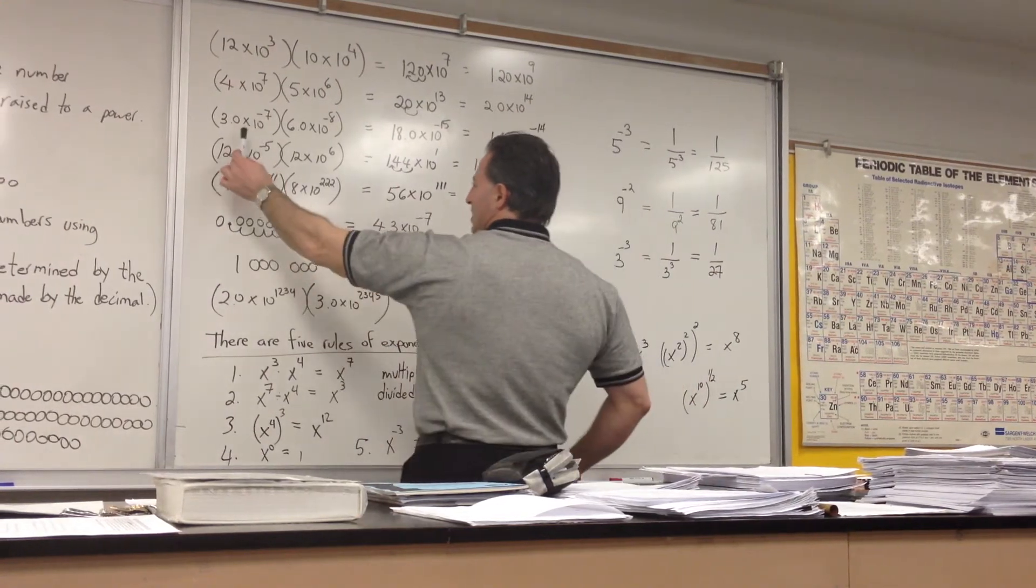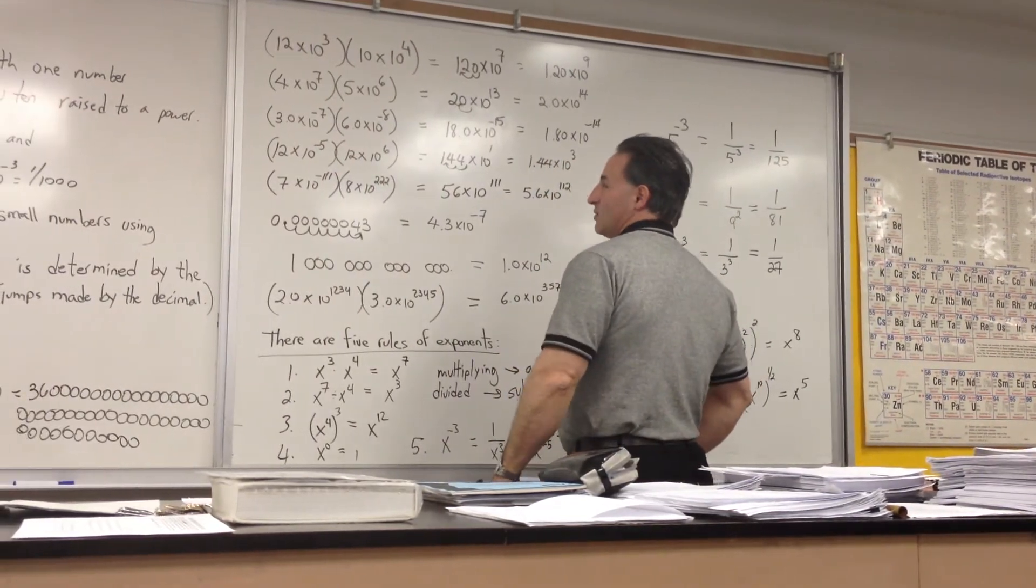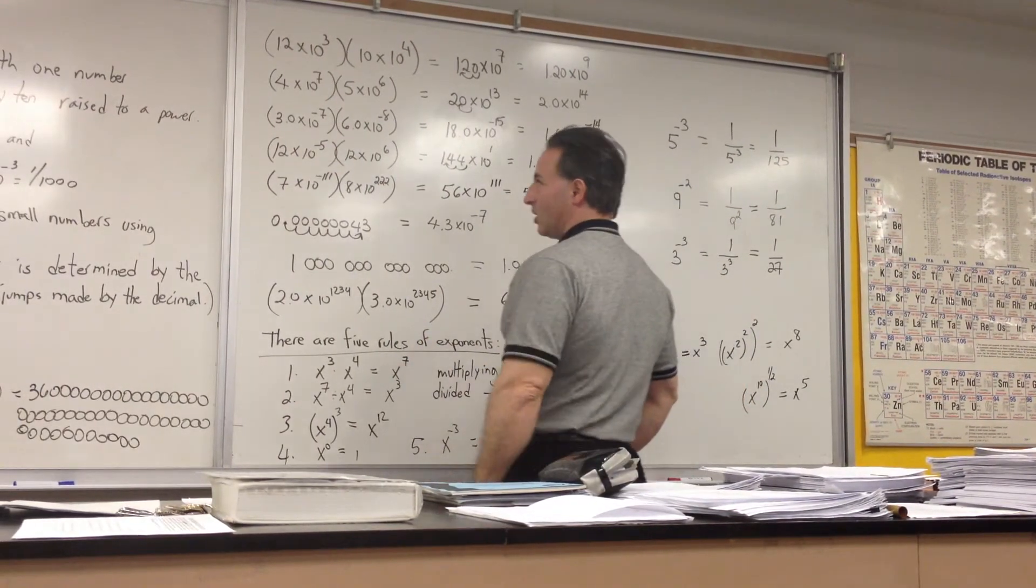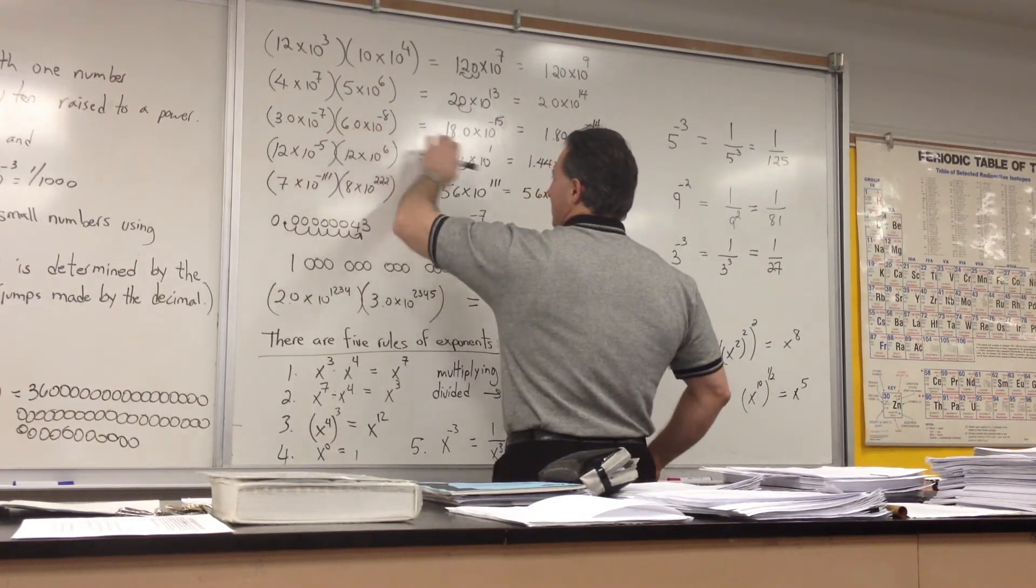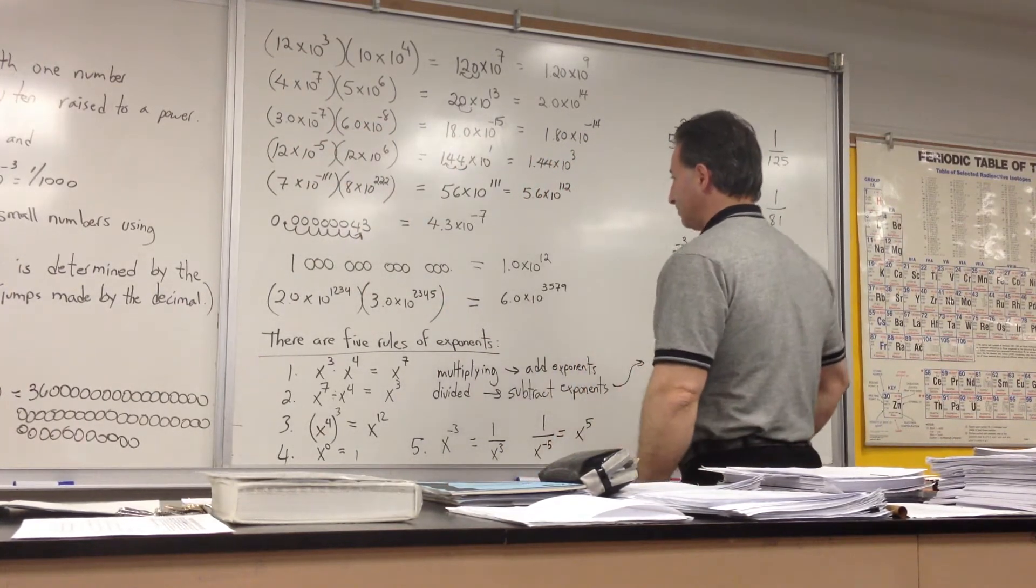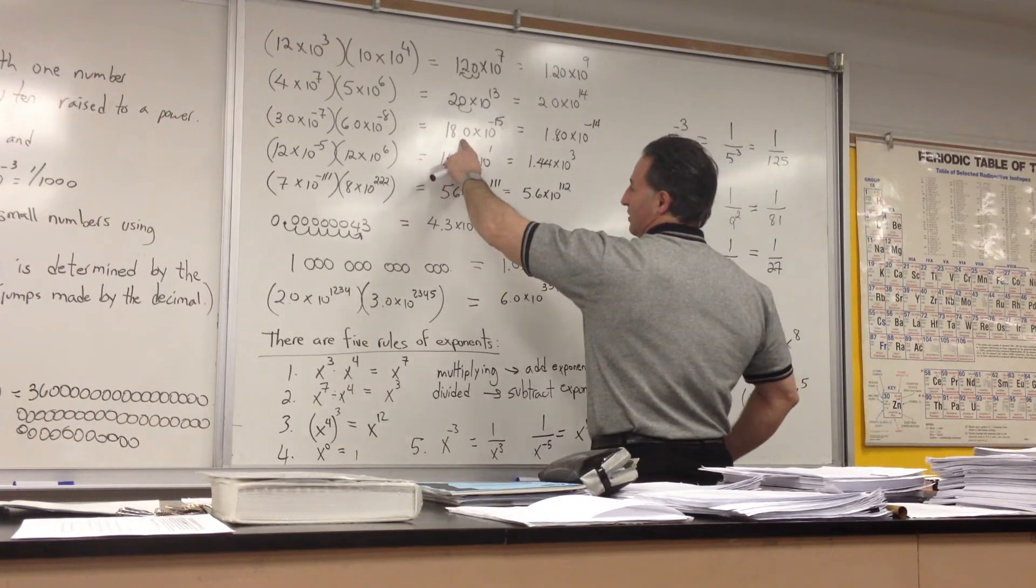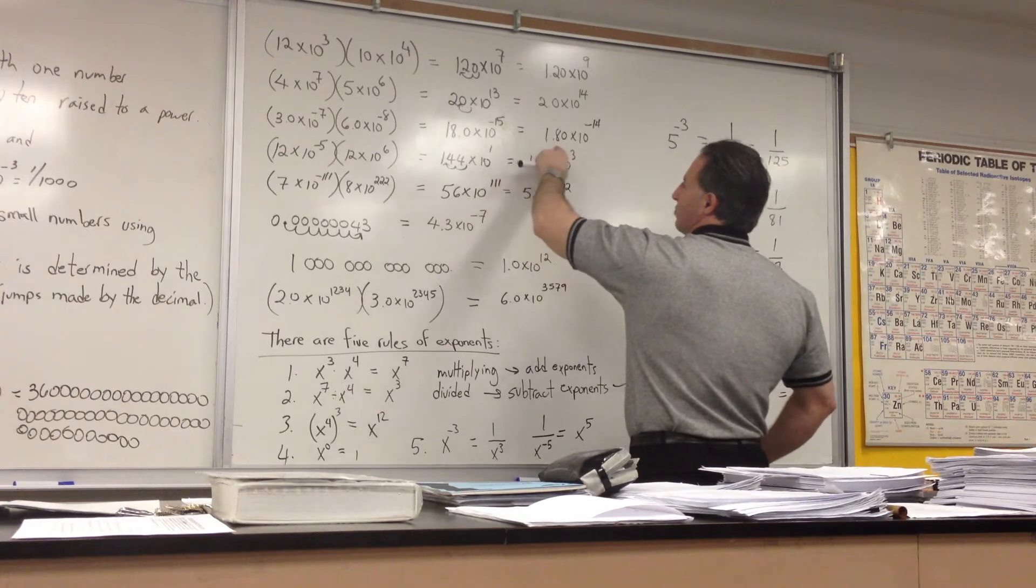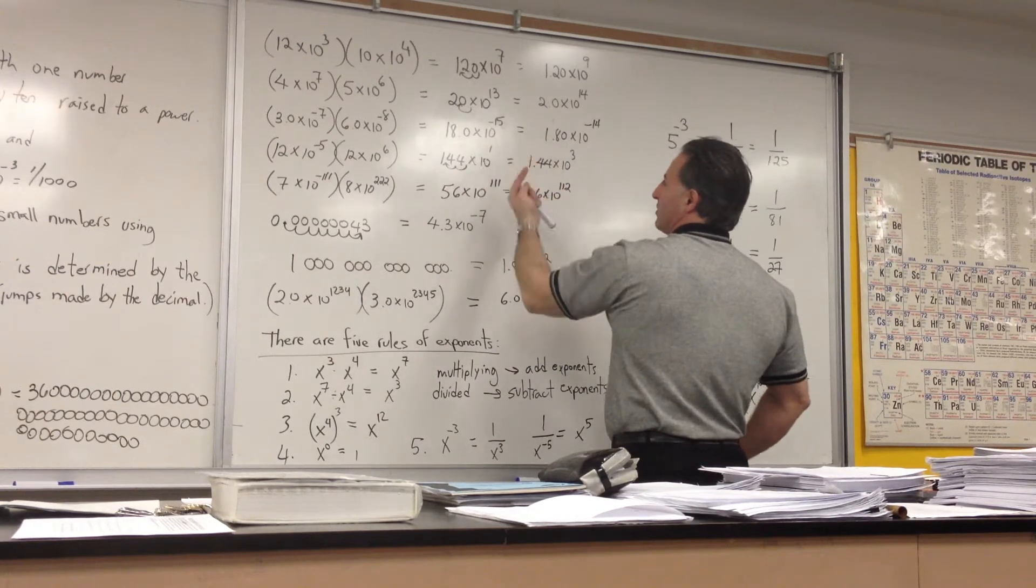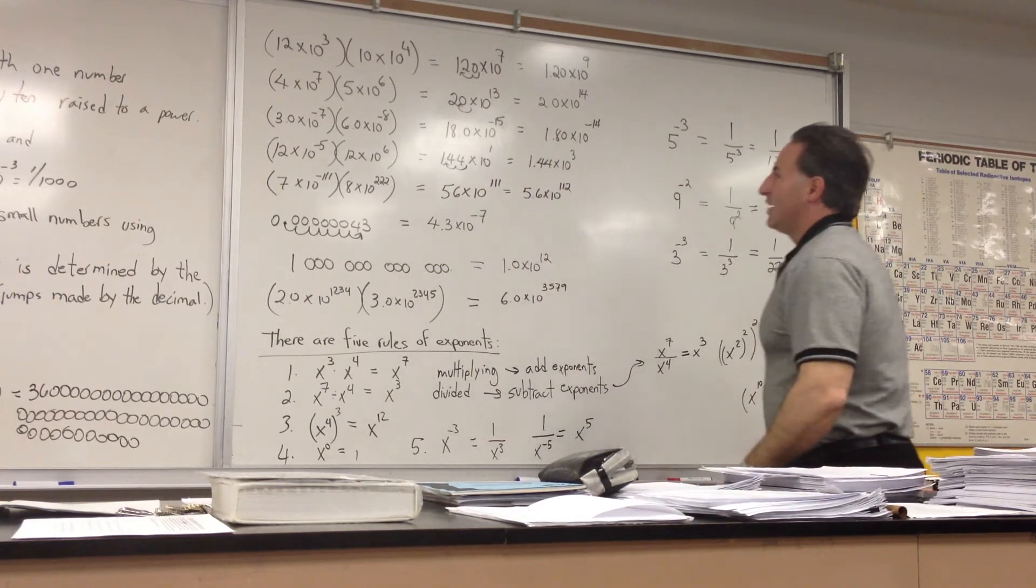3 times 10 to the minus 7 times 6 times 10 to the minus 8. Now we're working with negative exponents. We're working with very small numbers. So 3 times 6 gives you 18. 10 to the minus 7 times 10 to the minus 8 is 10 to the minus 15. We want to write in proper scientific notation, so we're going to move the decimal over by one spot, giving us 1.8. When you move it over to the left, the number gets bigger, so we go 10 to the minus 14.